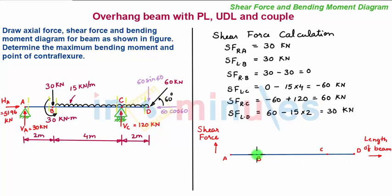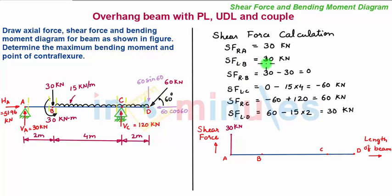This is the zero line of shear force. Now shear force towards the right of A is 30 kN. So by taking a proper scale, we plot plus 30 kN and connect it with a vertical line. At point B, the shear force towards the left of B is also 30 kN, so we plot a point of 30 kN over point B. Between points A and B there is no force, so shear force remains constant and we connect it by a horizontal line.